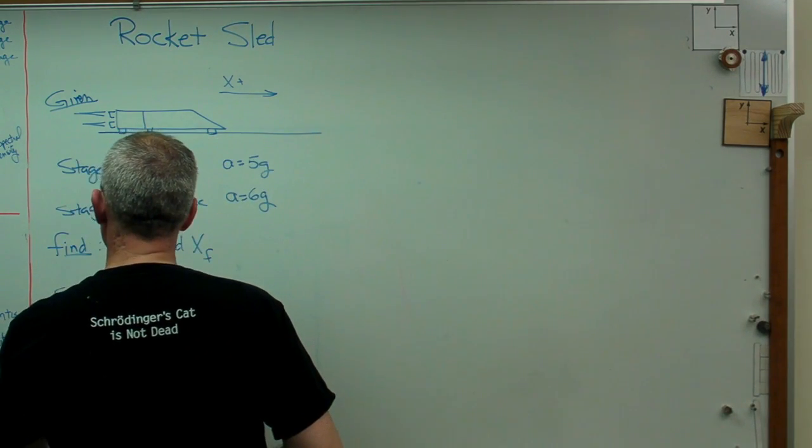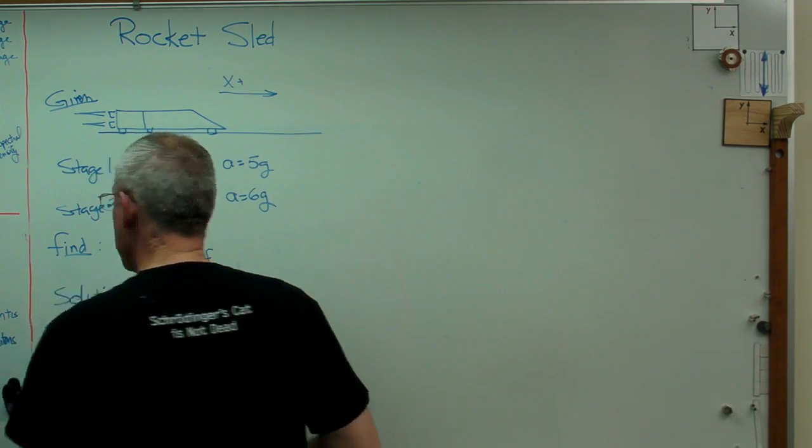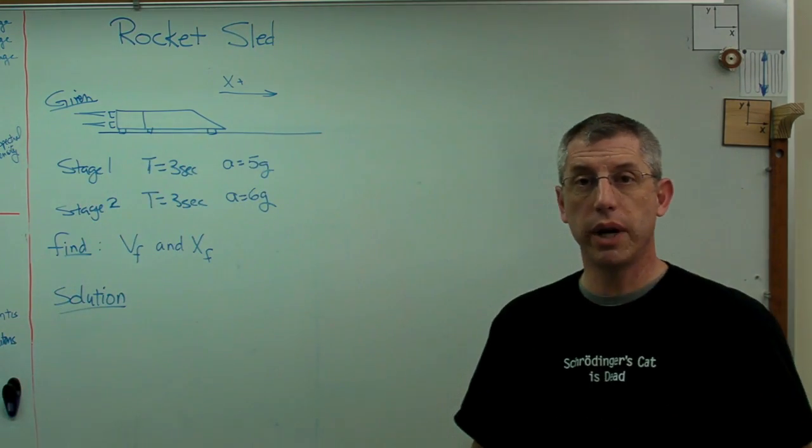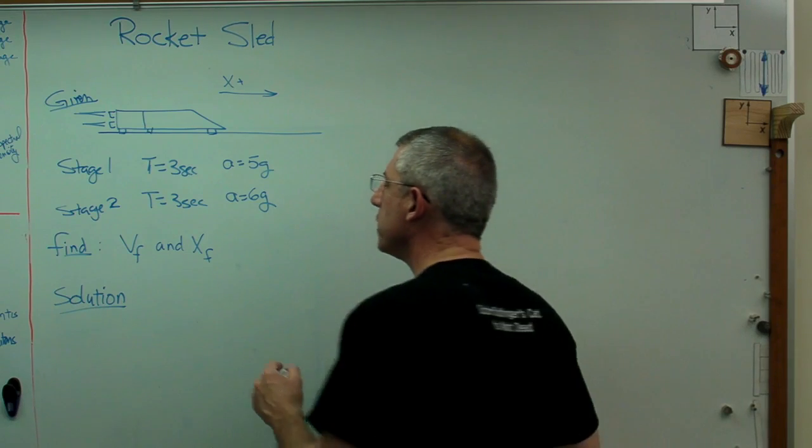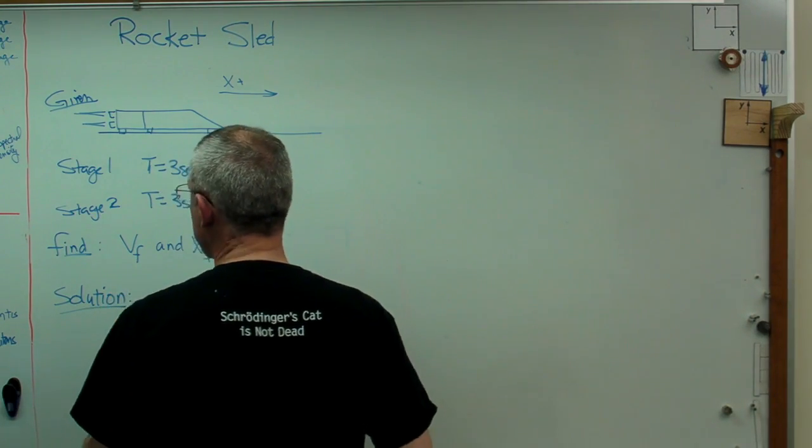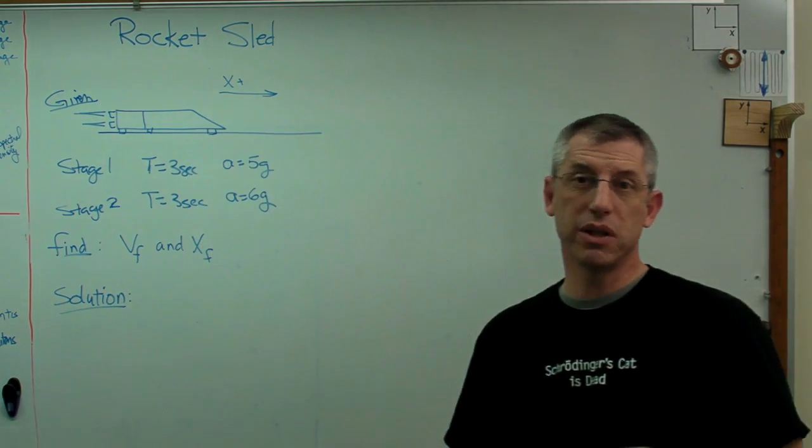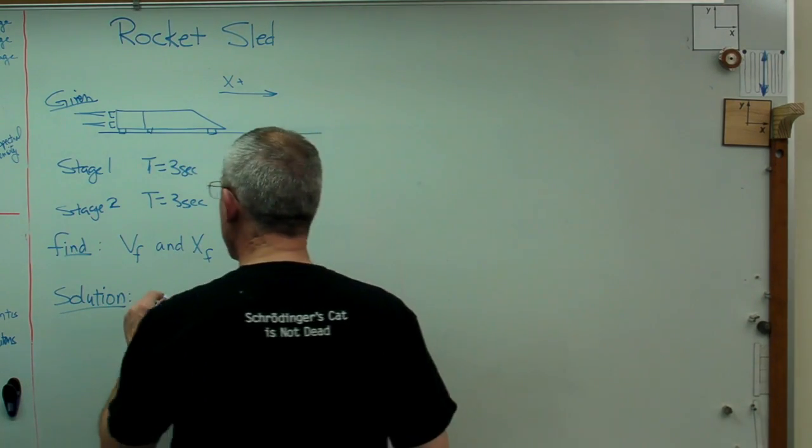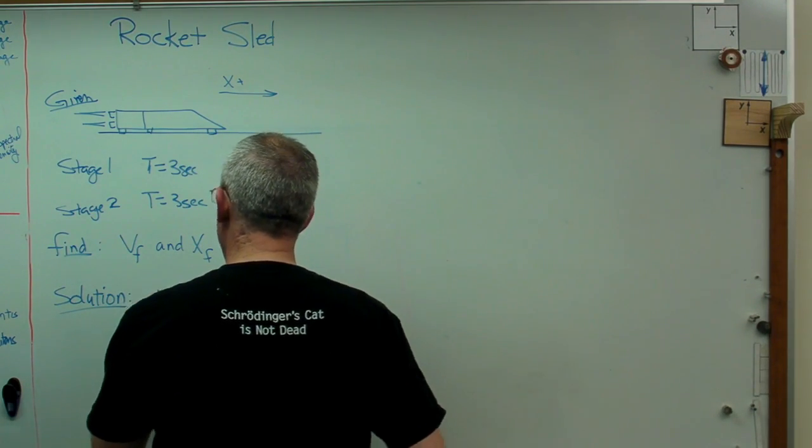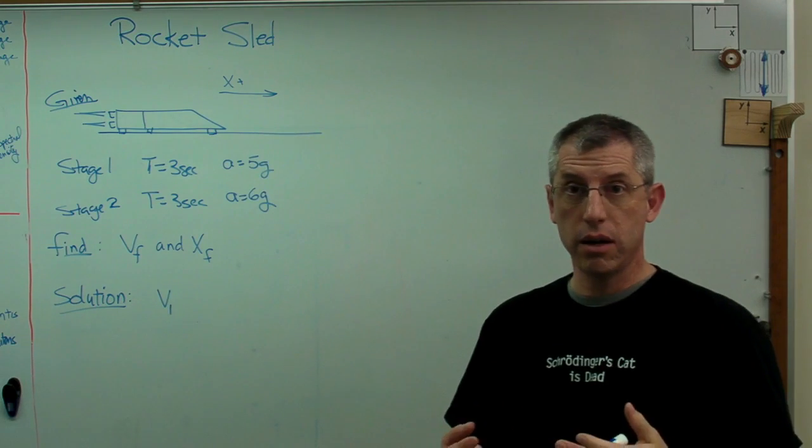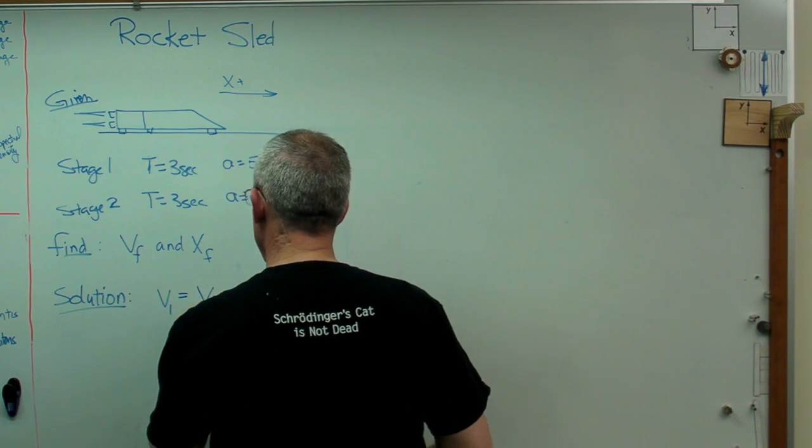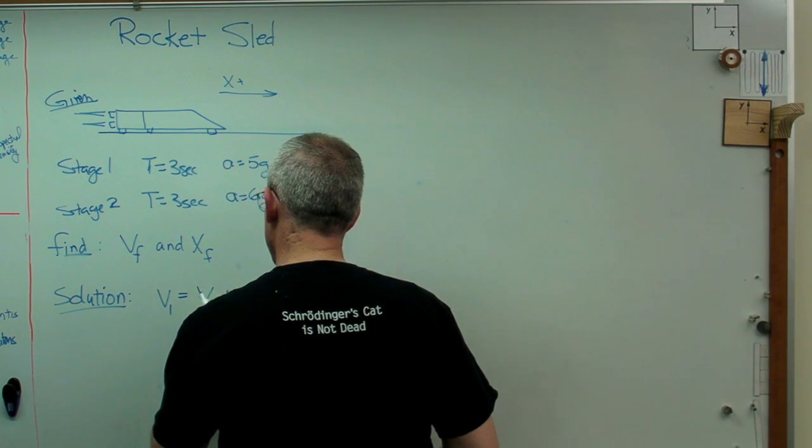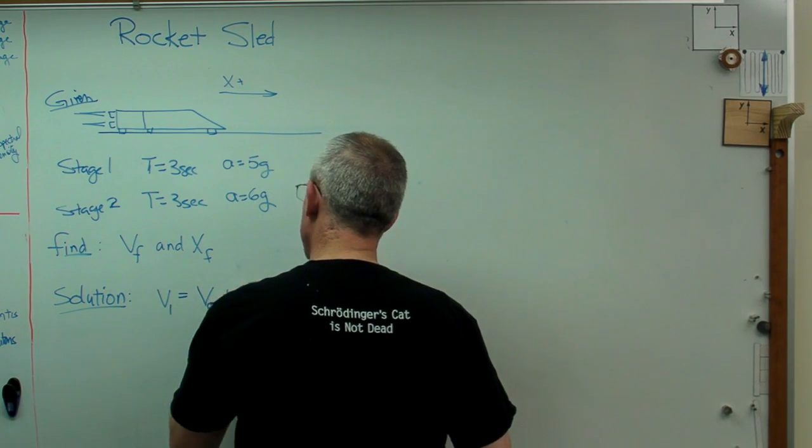So our solution, we can do this two ways. We can do this algebraically or graphically using a motion diagram. So I'm going to try it both ways here. Let's do algebraic first, because we're using some pretty simple expressions that maybe we're familiar with already. So let's find V1, which is the velocity at the end of the first stage firing. That's going to be V0 plus A1 T1.